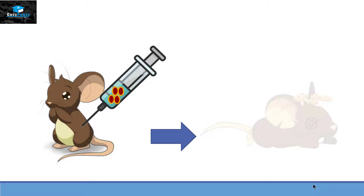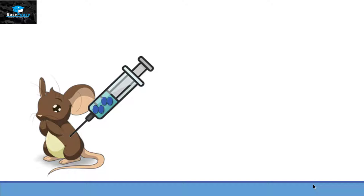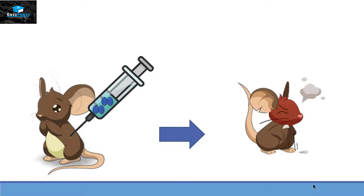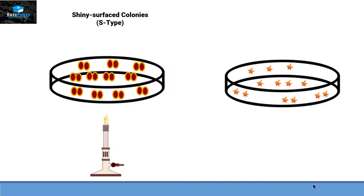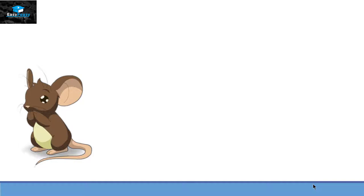Then he took another mouse and this time he injected the avirulent type bacteria into it. As a result, the mouse survived and was not dead. Then he took the virulent form and heated it up. By this way, the bacteria died and are called heat-killed bacteria. Then he took another mouse and injected the heat-killed bacteria into it. As a result, the mouse didn't die and remained alive.